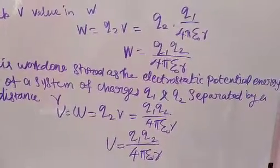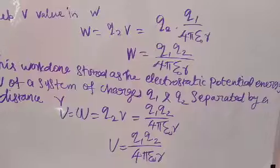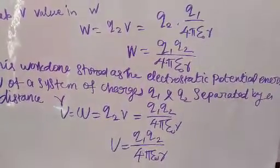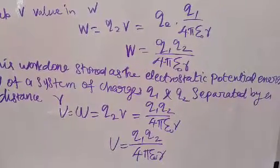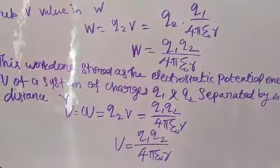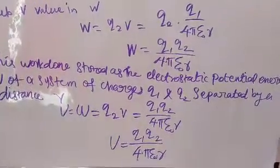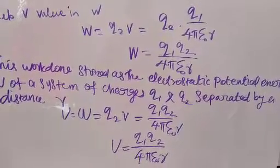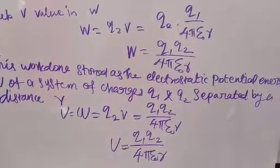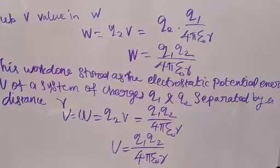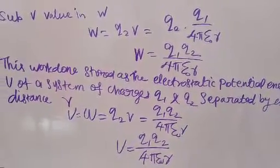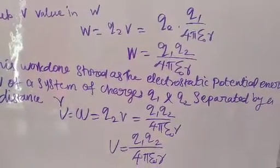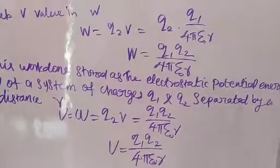Electrostatic potential energy depends only on the distance R. This formula U equal to Q1 Q2 by 4 pi epsilon naught R holds whether Q1 is brought from distance R while Q2 is at rest, or Q2 is moved from infinity to point R while Q1 is at rest, or both charges Q1 and Q2 are moved from infinity to distance R.